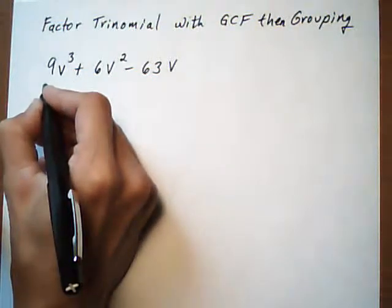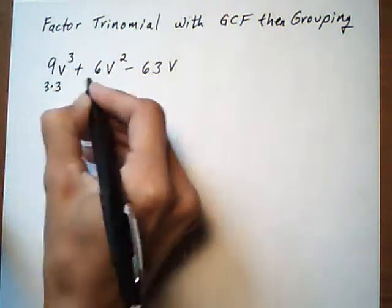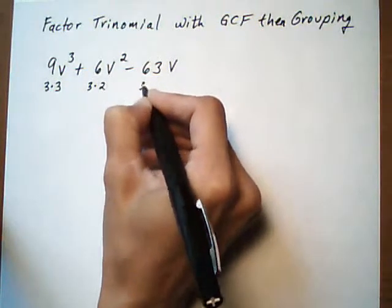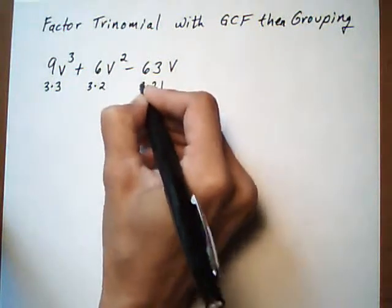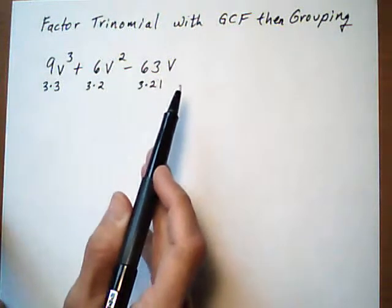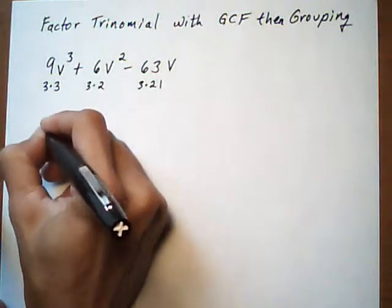So we can break 9 into 3 times 3, 6 is 3 times 2, and 63 is 3 times 21. So each of these terms has a 3 we can pull out. They also each have a V we can pull out.